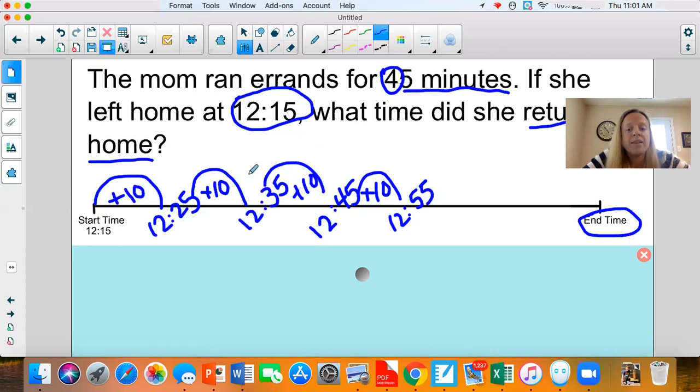Then I've got 10, 20, 30, 40 minutes that I've added. But my problem does not say that she ran errands for 40 minutes. It says that she ran errands for 45 minutes. So that means that I need another five-minute hop before I am finished.